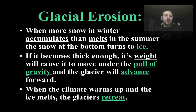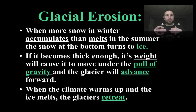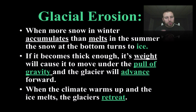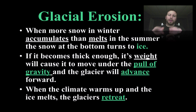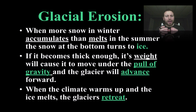Glaciers form when we have more snow accumulating than what melts. As more accumulates than melts, you always have more snow piling up, and eventually the stuff at the bottom packs together. It goes through a number of stages, but ultimately the end product is ice. As it gets thick enough and more accumulates year after year, the weight of that ice causes it to start moving under gravity — and that movement is known as advancing.